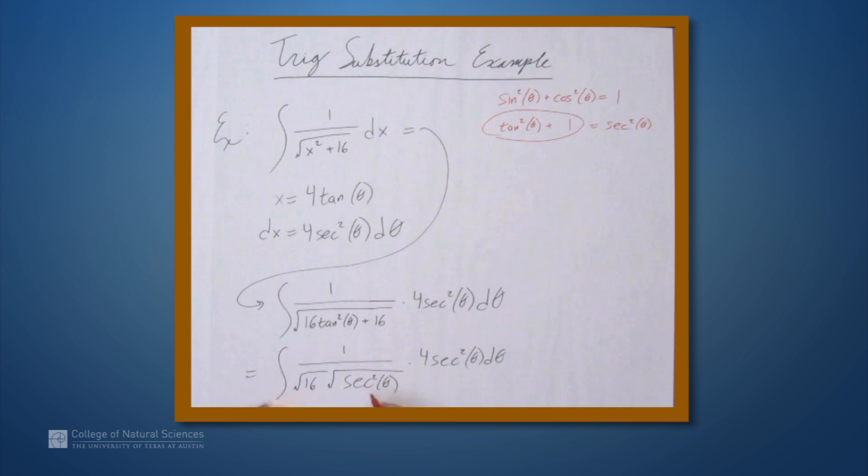We can simplify some more. We have a square root of 16 and a 4. Those cancel. And we also have a square root of secant squared, which is just secant in the denominator, and a secant squared in the numerator. So this disappears as does the 2. So this simplifies all the way simply to the integral of secant theta d theta.